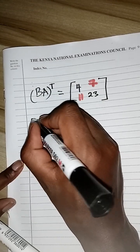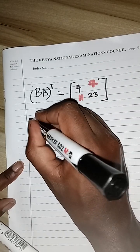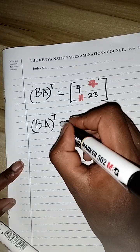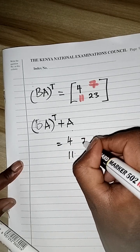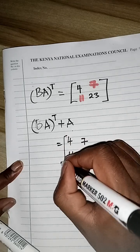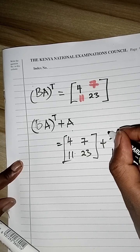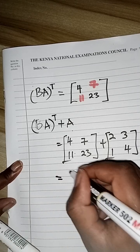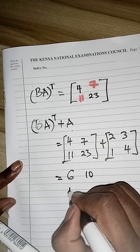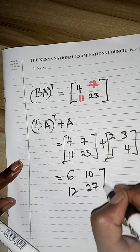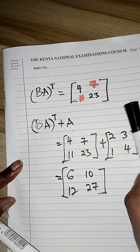Our full expression is BA transpose plus A. Adding A, which is [2, 1; 3, 4], to [4, 7; 11, 23]: 4+2=6, 7+1=8, wait — 4+2=6, 7+3=10, 11+1=12, 23+4=27. So the final answer is [6, 10; 12, 27]. Thank you for watching and remember to share and subscribe.